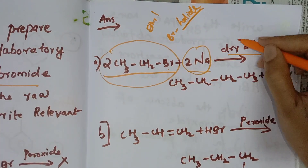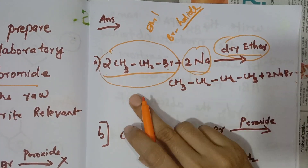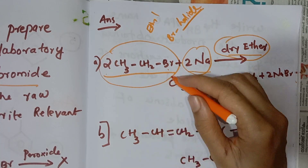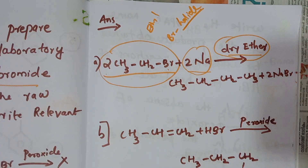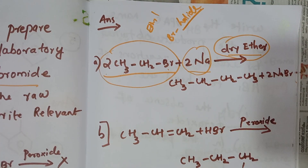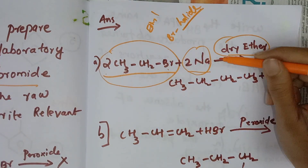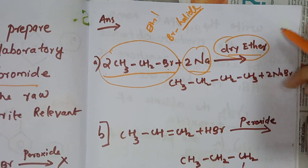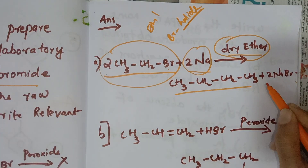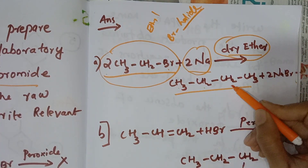We add sodium to ethyl bromide in the presence of dry ether. This gives us butane. The reaction is: 2 CH3CH2Br + 2Na → CH3CH2CH2CH3 + 2NaBr. This is the Wurtz reaction.